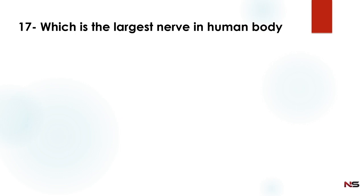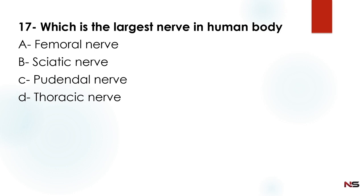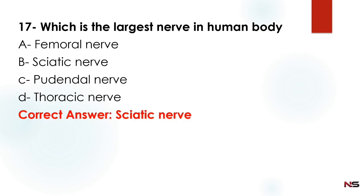Which is the largest nerve in the human body? Option A: femoral nerve, Option B: sciatic nerve, Option C: pudendal nerve, Option D: thoracic nerve. The correct answer is the sciatic nerve — the sciatic nerve is the largest nerve in the human body.